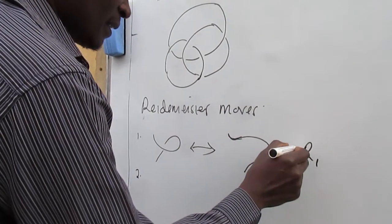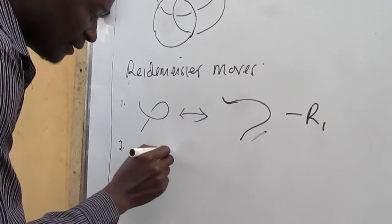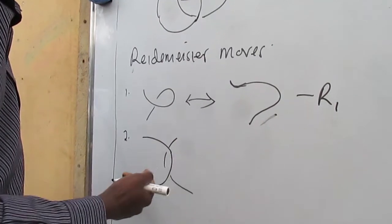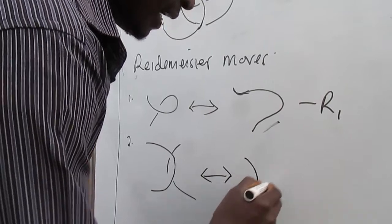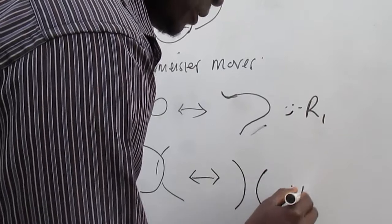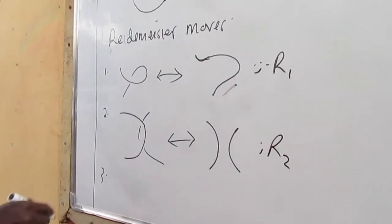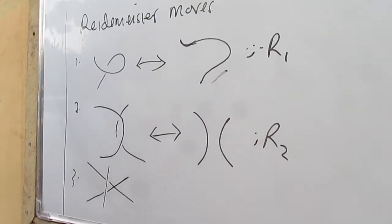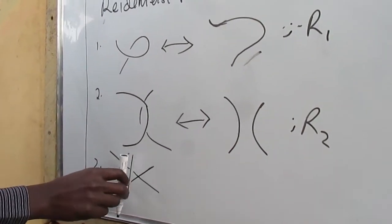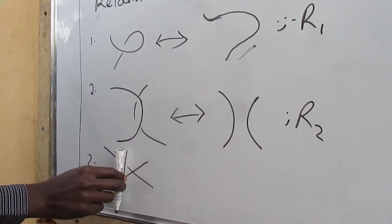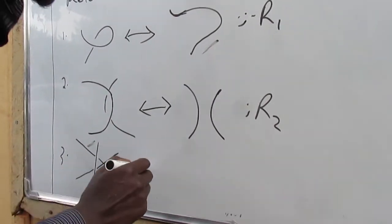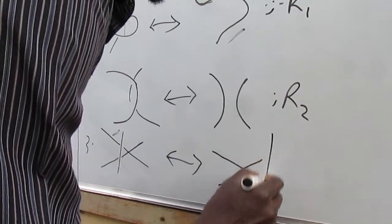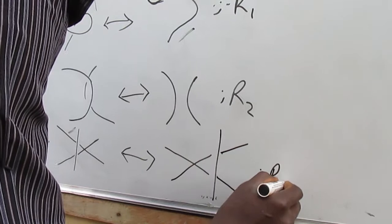The second Reidemeister move: if in a small neighborhood you have two successive over crossings or under crossings, this can also be resolved to remove both crossings. This is noted R2. The third Reidemeister move: if you have a strand making crossings with two others — where both strands go over or under — it is possible to slide the strand so that if it was to the left, it moves to the right.